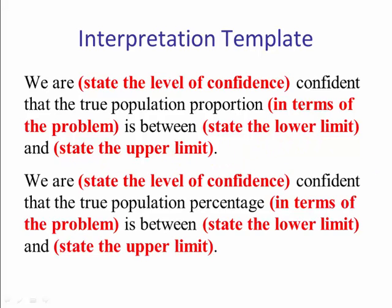And we could also say that we are—we state the level of confidence—confident that the true population percentage, give that in terms of the problem, is between we state the lower limit percent sign and the upper limit percent sign.